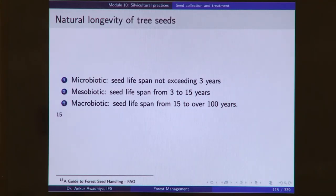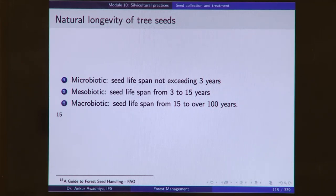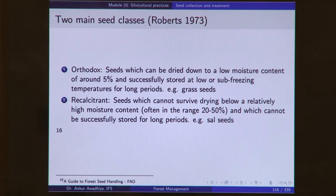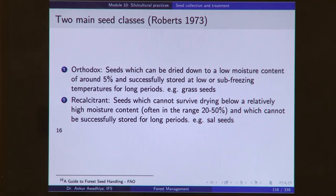During storage, we need to consider the natural longevity of tree seeds. Microbiotic seeds have a life span not exceeding 3 years. Macrobiotic seeds last for 15 to over 100 years. Mesobiotic seeds last for 3 to 15 years. Seeds are classified into two categories for storage: orthodox seeds can be dried down to a low moisture content of around 5 percent and successfully stored at low or sub-freezing temperatures for very long periods, such as grass seeds. Recalcitrant seeds cannot survive drying below a relatively high moisture content — often in the range of 20 to 50 percent — and cannot be successfully stored for long periods, for example sal seeds.